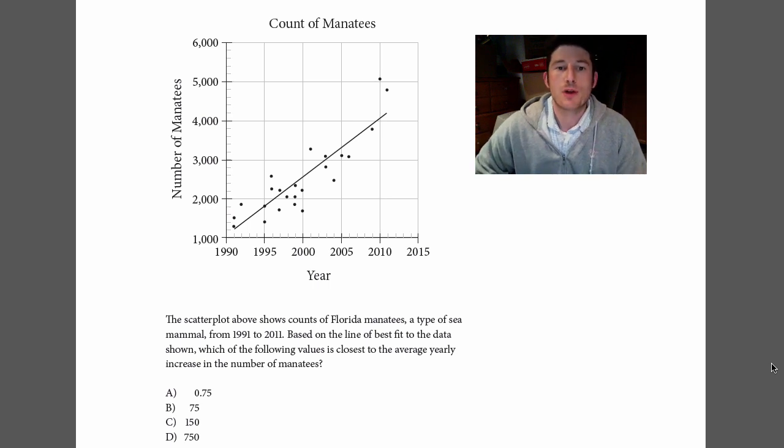Hey, what's up? It's Brian with Radical Prep. We're going to be doing a data analysis question for the new SAT, the one coming in March 2016. This comes from the College Board website, and it's about manatees, so you know it's definitely authentic. The scatter plot shows counts of Florida manatees, a type of sea mammal, from 1991 to 2011. Based on the line of best fit to the data shown, which of the following values is closest to the average yearly increase in the number of manatees?